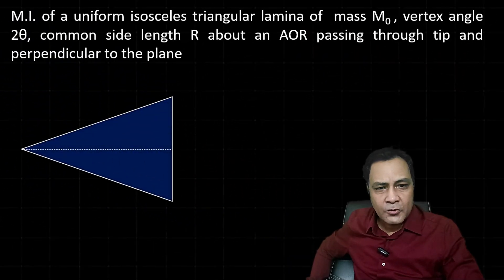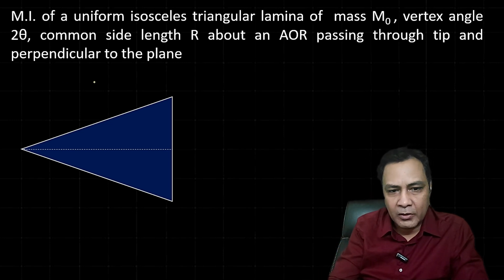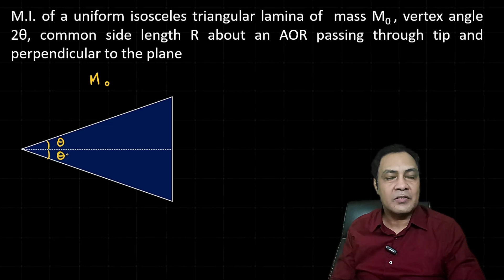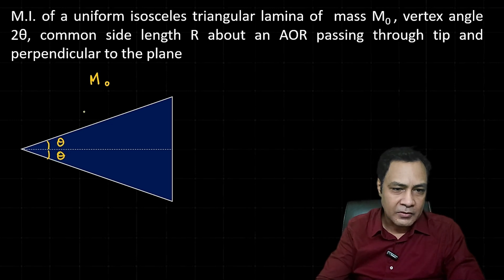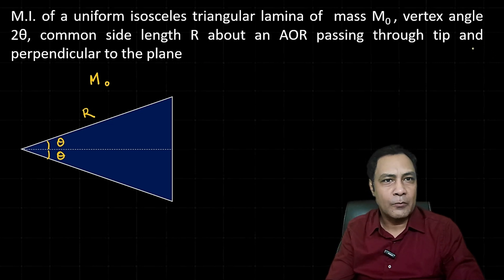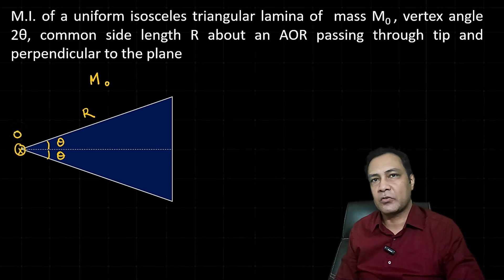The main task is to find the moment of inertia of an isosceles triangle lamina. Suppose I have this isosceles triangle lamina having mass m0 and vertex angle 2θ — so this angle is θ and this angle is θ — with side length r. The axis of rotation passes through the tip and is perpendicular to the plane.